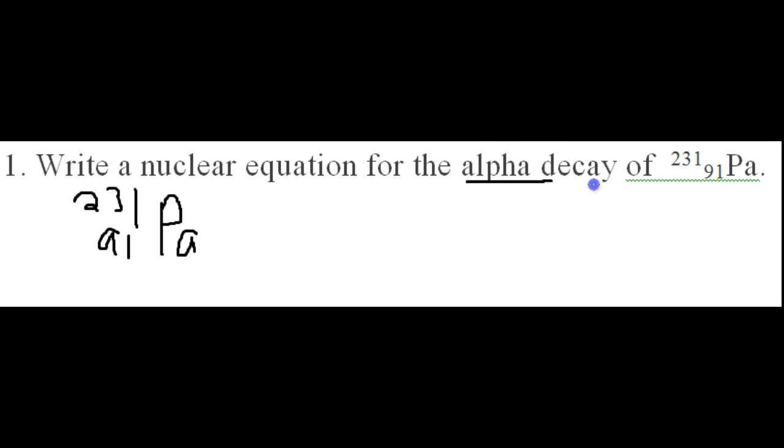Then I ask if during alpha decay we're adding anything to the element. They say no, so that's when we put our arrow to show that this is going to be equal to what it makes.